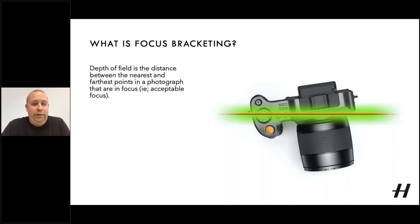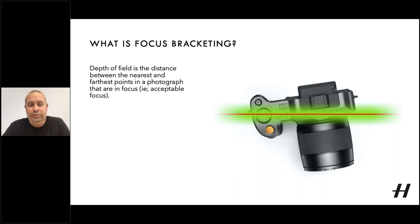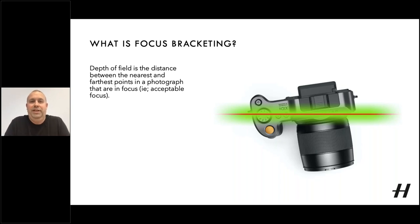What is focus bracketing? Let's start with the basics. First of all, we need to understand depth of field. Depth of field is the distance between the nearest and the farthest points in the photograph that are in acceptable focus. Looking at the diagram, the red line is the ultimate plane of focus, and the green area which fades away either side of that red line is the depth of field. The green area is in focus, and as it gets wider and spreads out, the focus begins to get lost and we get a blurred section of the subject.